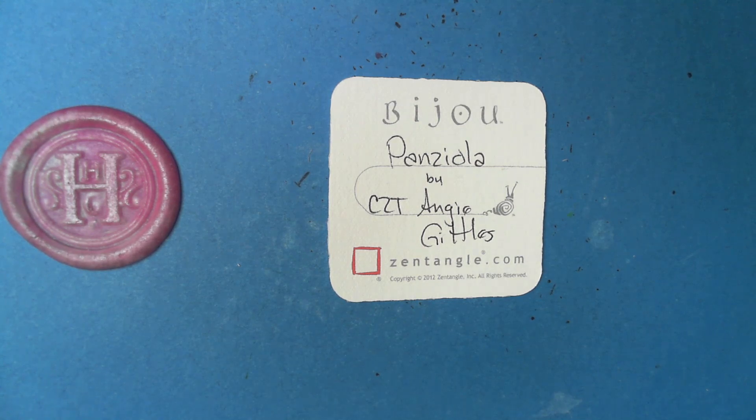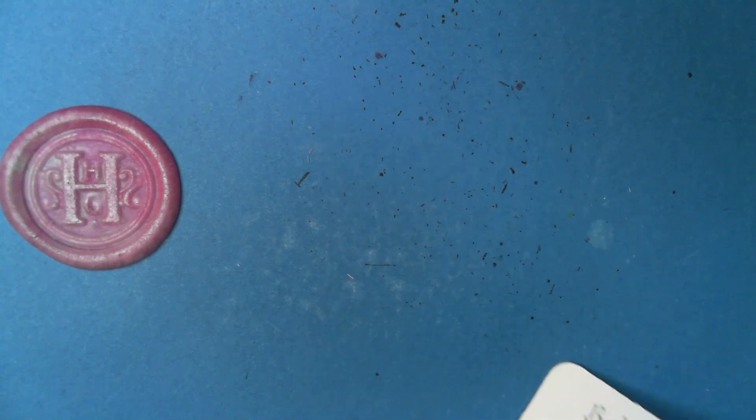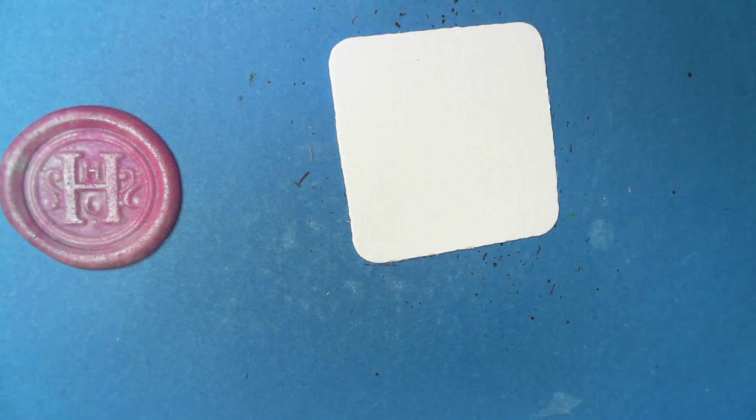Welcome to this Zentangle quickie. My name is Heather Hartway Gladden, I'm a certified Zentangle teacher. Today we're going to take a look at the tangle Panziola from CZT Angie Gittles. This is cute, and I did not know there is such a thing as a Panziola, spelled with an S, that is a mix or cross between a pansy and a viola. I found this out in Angie's post on her Instagram where she shows these step-outs. Link for that is in the description section.